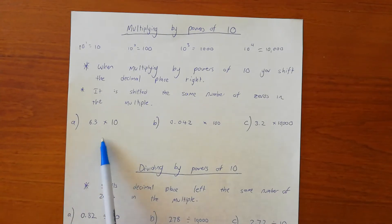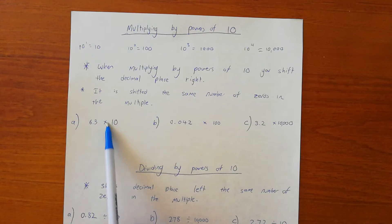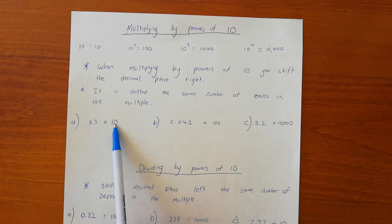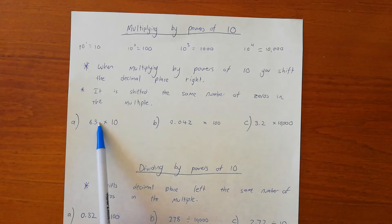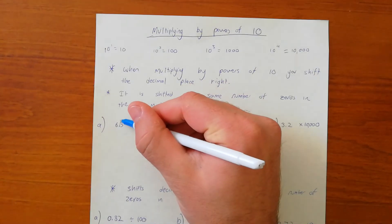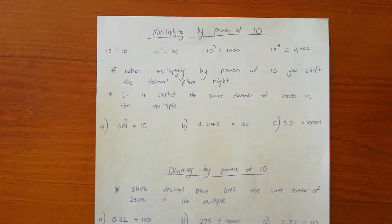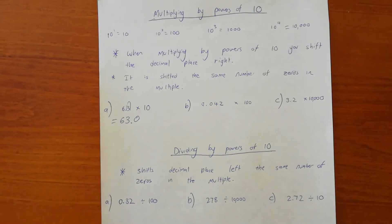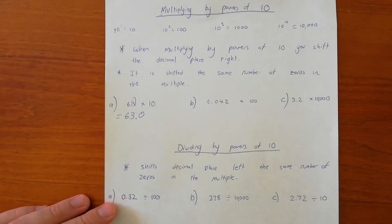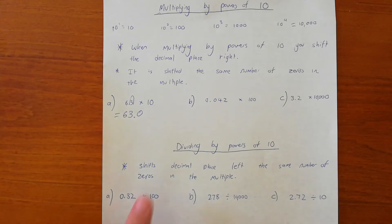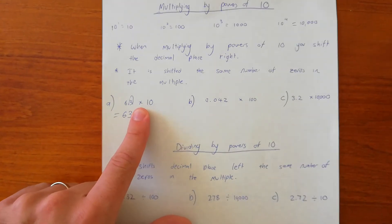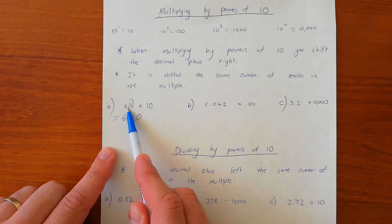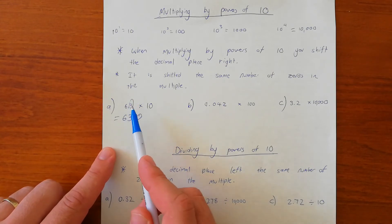So let's look at the first one: 6.3 times 10. This is the multiple — how many zeros are there in this number? There is one zero, right there. So that means we're going to shift the decimal place one spot to the right. It's going to do a bunny hop — it comes up and over. So our answer is 63.0. We insert zeros if necessary. I'll write it as 63.0 just to show that we've moved the decimal spot one bunny hop to there.